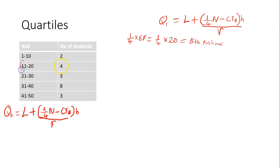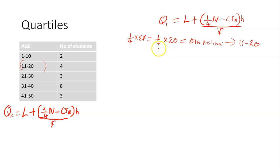This class becomes the first quartile class. So the first quartile class is class 11 to 20. After identifying the class, you can now find the first quartile itself.